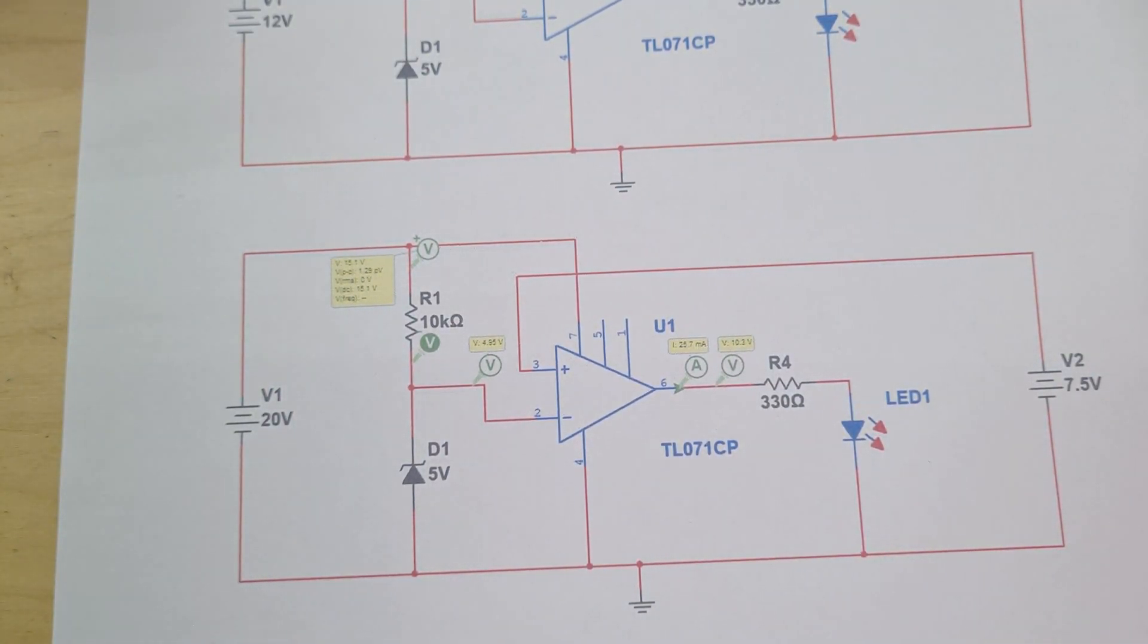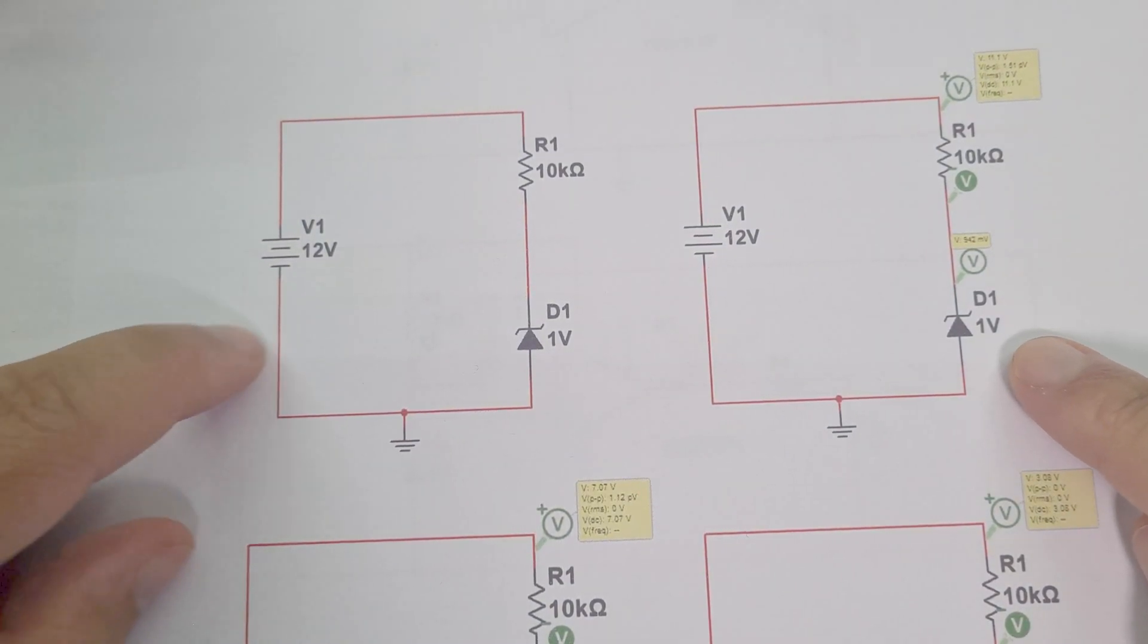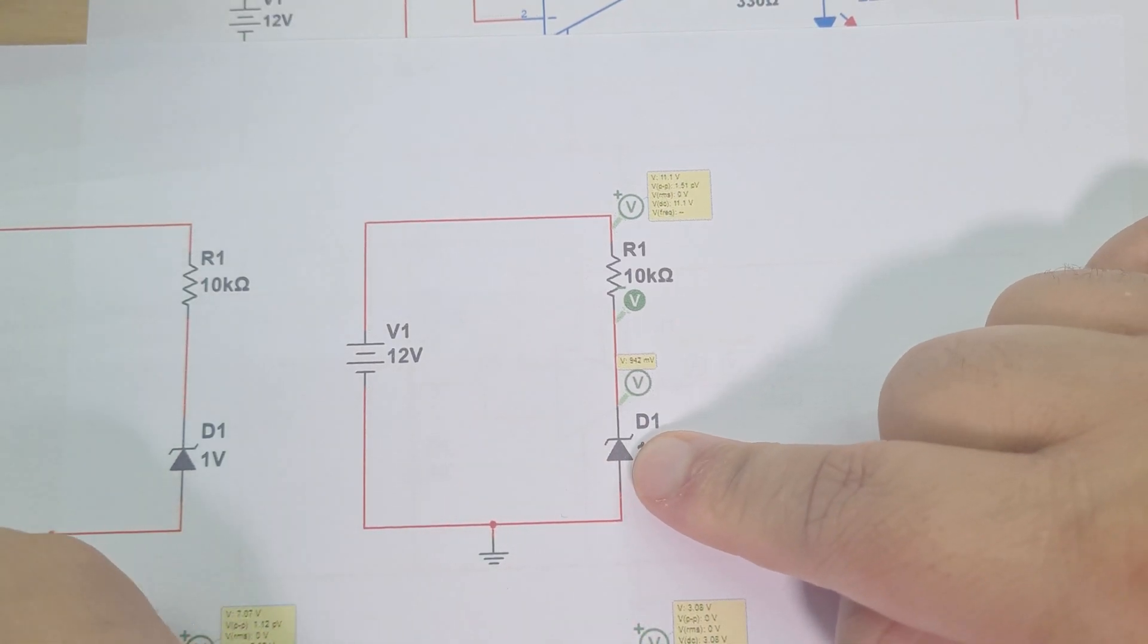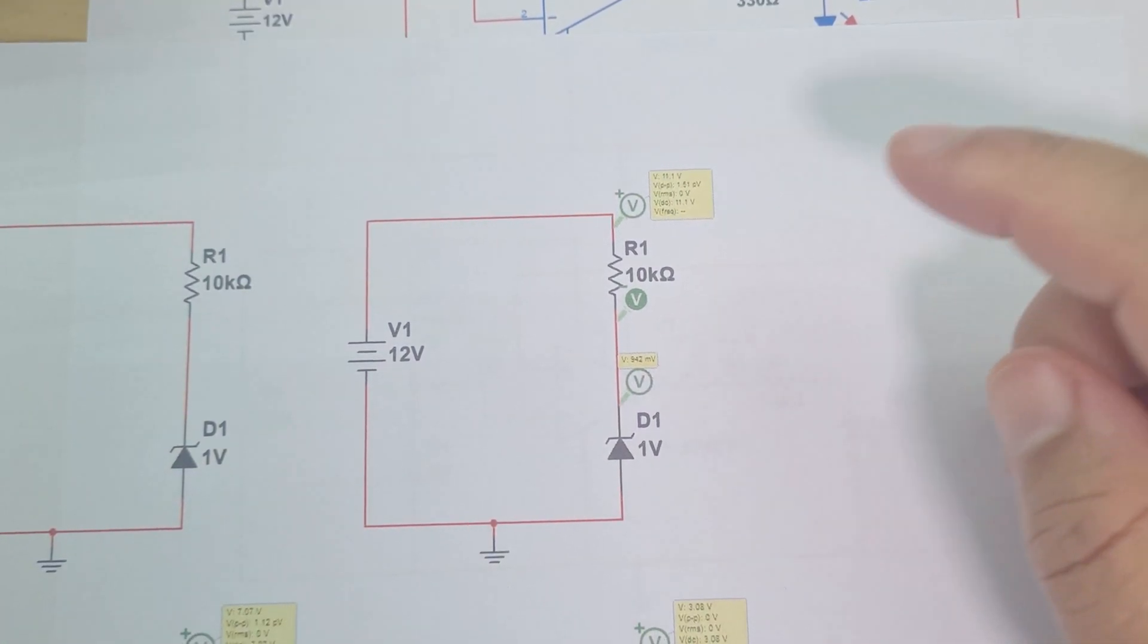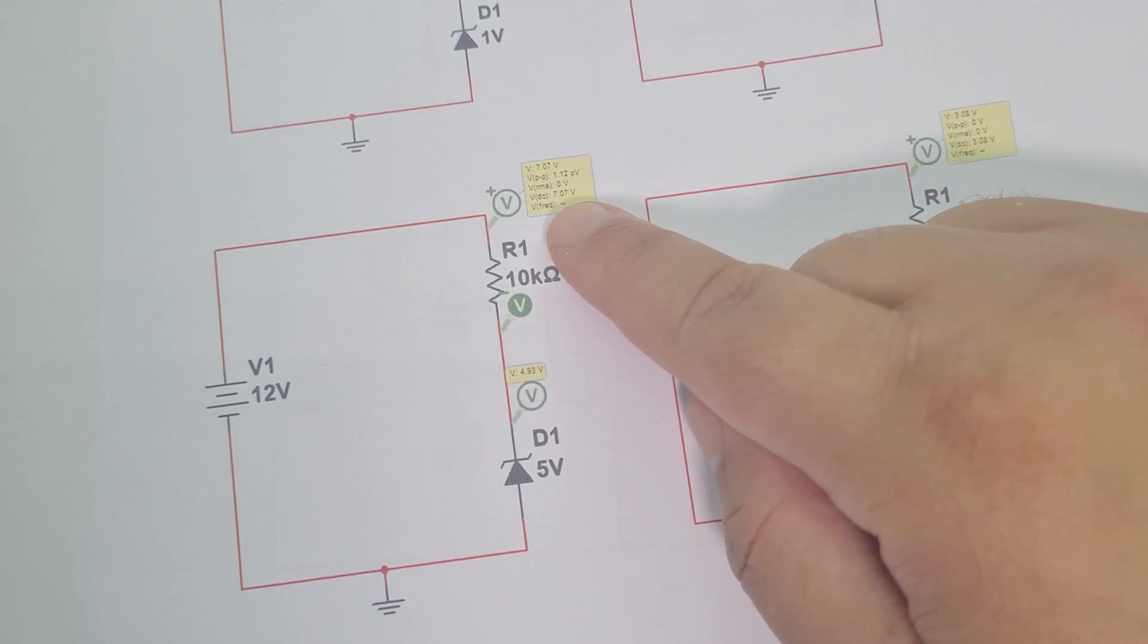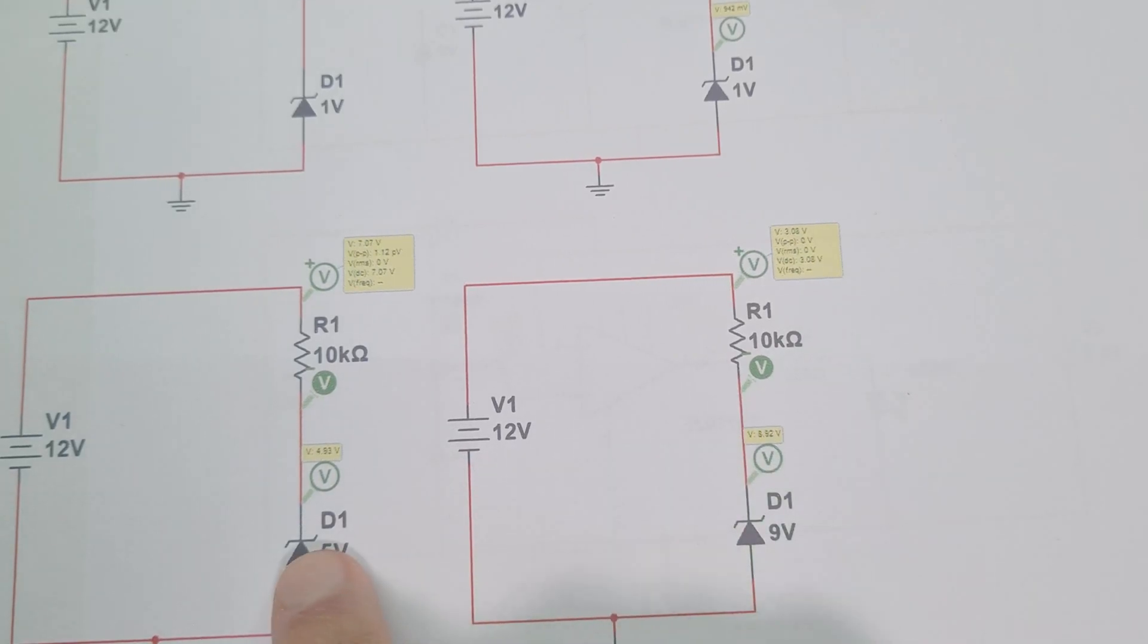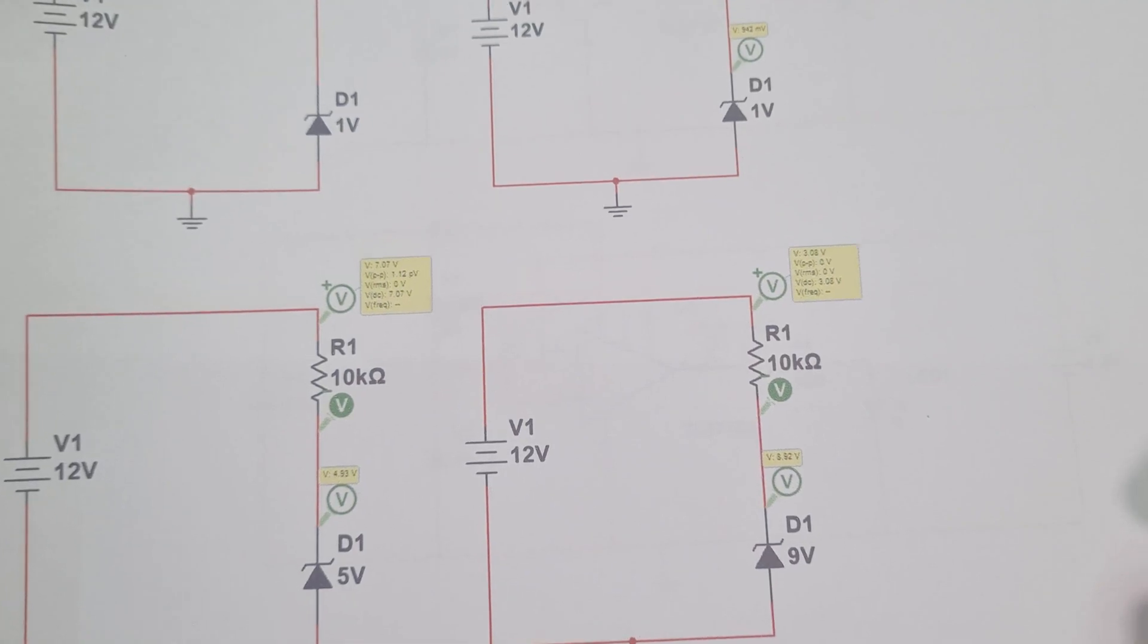If you look here as I change the voltage of the Zener diode, I've got a 12 volt supply, 10k resistor and 1 volt Zener. That means we're gonna have a 1 volt drop across this Zener regardless, so 12 minus 1 gives me 11 volts drop across here. If I increase this Zener to 9 volts or 5 volts, you can see I end up getting a 7 volt drop across that resistor because I've got 5 volts there, and same there, 9 volts ends up being a 3 volt drop. I can easily set a reference voltage just based upon the Zener.